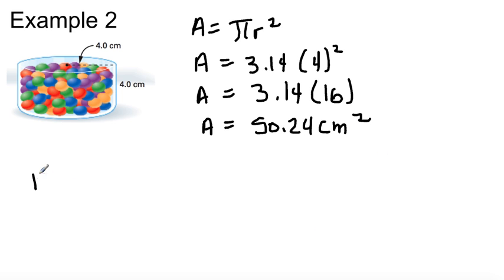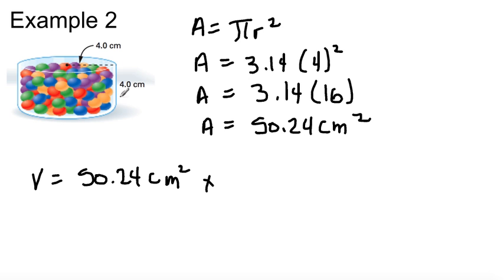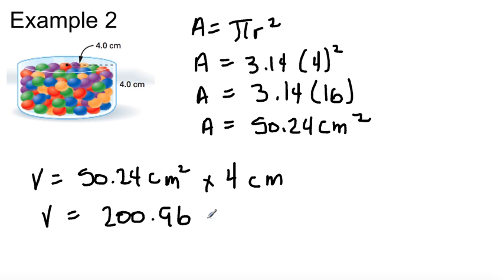The volume is 50.24 centimeters squared times 4 centimeters, giving a volume of 200.96 centimeters cubed. Pause after every example to get all that down.